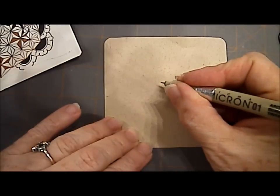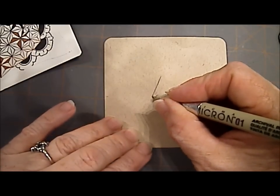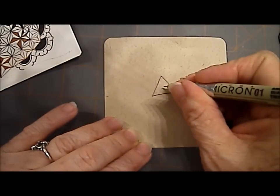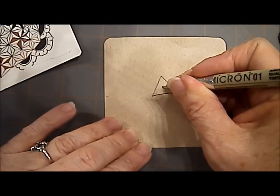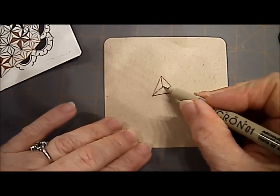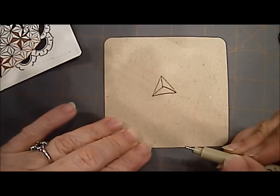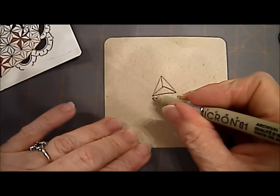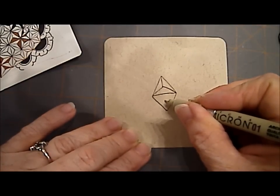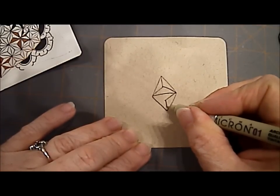We start out by drawing a triangle. Put a dot in the center, and then from that dot, lines go out to each corner. Now we just build on this triangle.